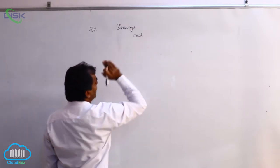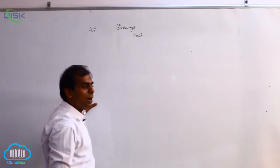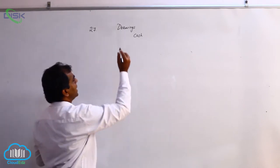When we look at cash, it is a real account and the real account rule says credit what goes out. So we credit cash.